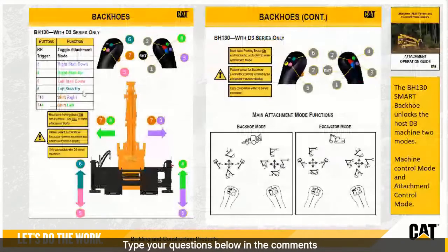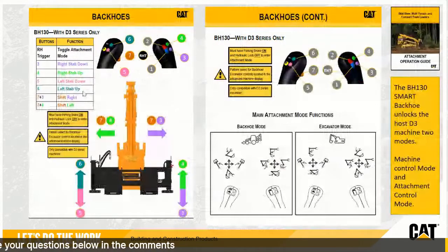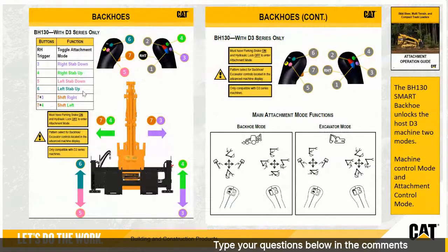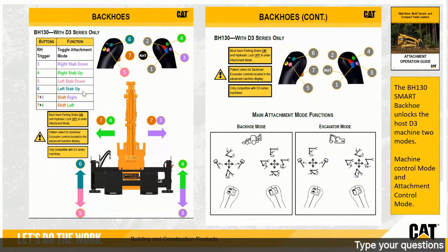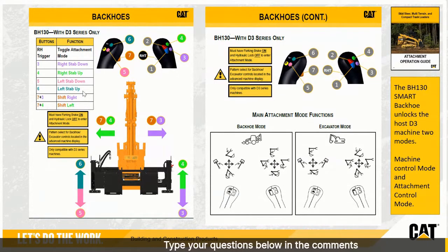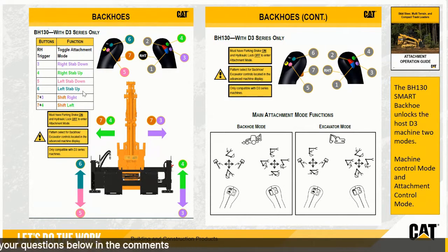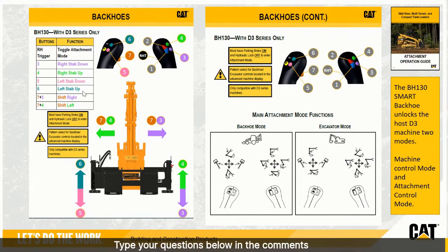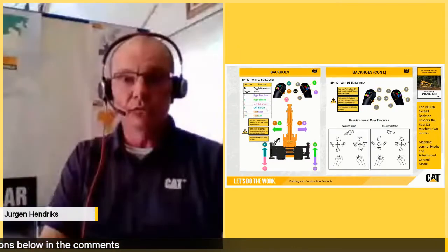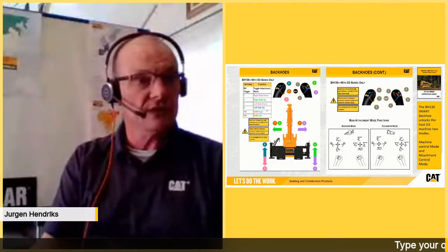On this screen you can see both the left and right joystick and the functionality buttons. As soon as you connect the tool and select work tool mode, the buttons and joysticks function as shown. For example, on the right joystick, button three is right step down and button four is right step up. Button seven plus three is side shift right. If you select backhoe loader pattern, the left joystick controls boom up and down. If you switch to excavator mode, the right joystick controls boom up and down.